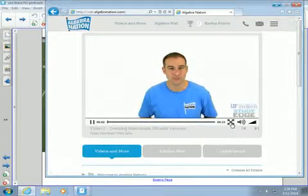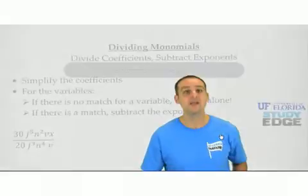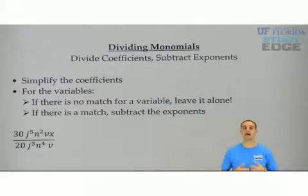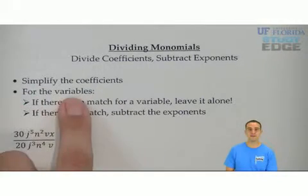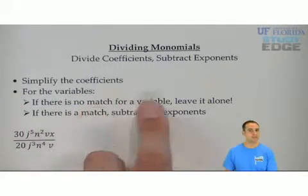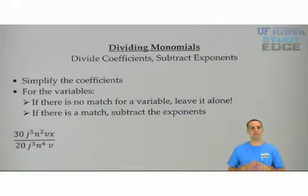To divide a monomial over a monomial, we're going to divide the coefficients and subtract the exponents. You'll simplify the coefficients, and for the variables, if there's no match for the variable, leave it alone. If there is a match, you'll subtract the exponents.